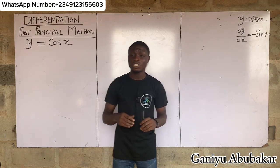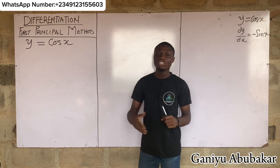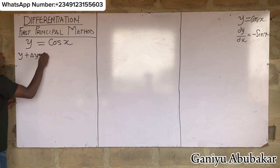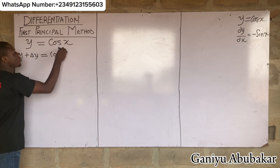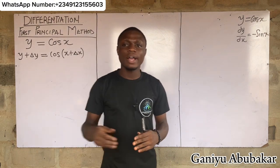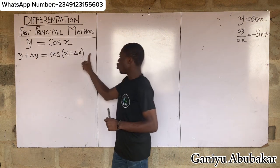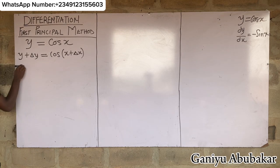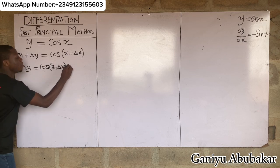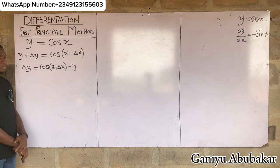From our previous classes on the first principle method of differentiation, we know that to y we add change in y, and to x we add change in x. So y plus Δy equals cos(x + Δx). Taking y to the other side, we have Δy equals cos(x + Δx) minus y.